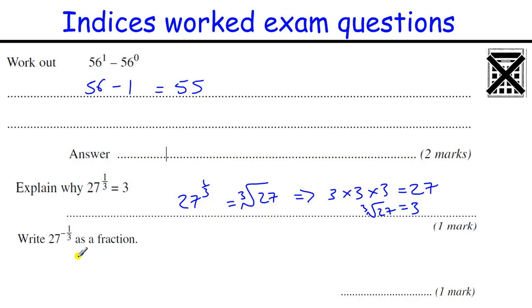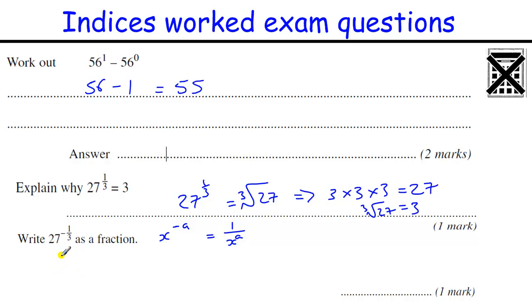Write 27 to the minus one-third as a fraction. This is the same as before but with a negative power — and this doesn't mean the answer is negative. Negative powers mean 1 over what's left: x to the minus a equals 1 over x to the a. So 27 to the minus one-third is 1 over 27 to the one-third, which is 1 over 3.